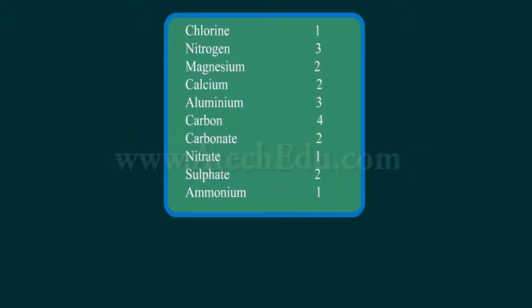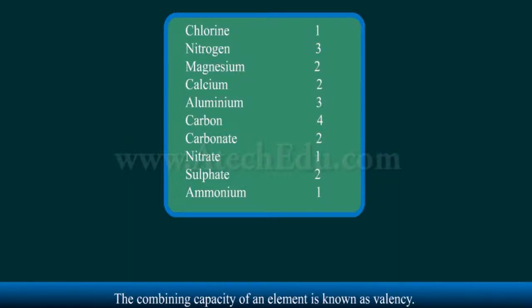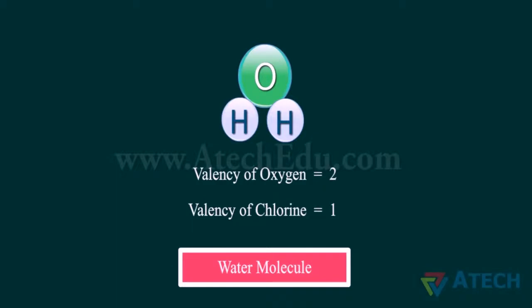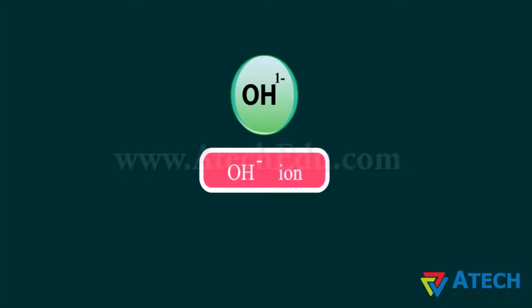Atoms of one element combine with atoms of another element to form a compound. Each compound has a specific combining capacity known as valency. In hydrochloric acid, the valency of both hydrogen and chlorine is 1. In water, the valency of oxygen is 2 while the valency of hydrogen is 1 — that is why two atoms of hydrogen combine with one atom of oxygen. Some compounds have groups of elements as ions. When one oxygen ion combines with one hydrogen ion, the charges don't balance — oxygen has two negative charges and hydrogen has one positive charge — resulting in a hydroxide ion with one negative charge. Hence, the valency of a hydroxide ion is 1.